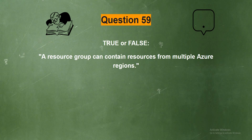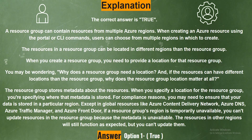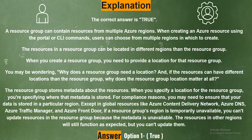Question 59. True or false? A resource group can contain resources from multiple Azure regions. Option 1: True. Option 2: False. The correct answer is Option 1, True. Explanation: The correct answer is True. A resource group can contain resources from multiple Azure regions. When creating an Azure resource using the portal or CLI commands, users can choose from multiple regions in which to create. The resources in a resource group can be located in different regions than the resource group.